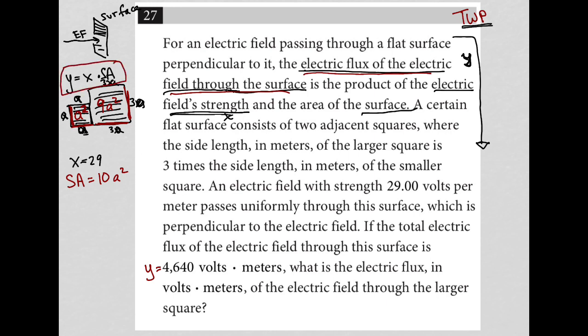Y equals X times SA. So I can say, well, that means Y equals 29 times 10A squared. But the question tells me that Y is 4640. So I can write that as 4640 equals 29 times 10A squared. Simplifying that to 4640 equals 290A squared.